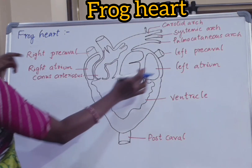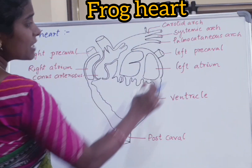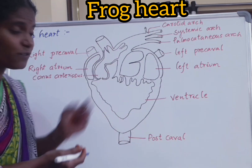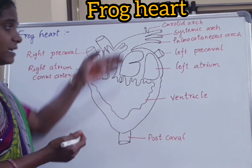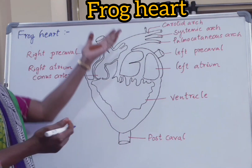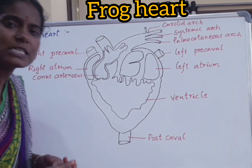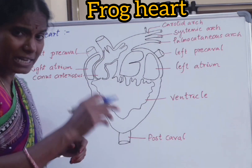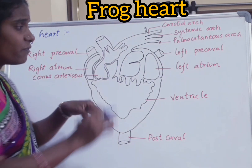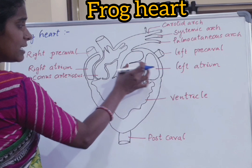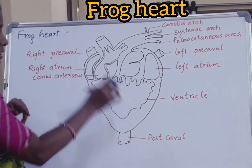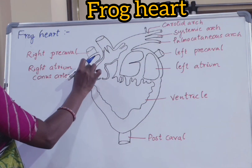The sinus venosus is present dorsally on this heart. If we are looking at the ventral side, the sinus venosus is on the dorsal side. It is a triangular chamber which connects to the right atria.